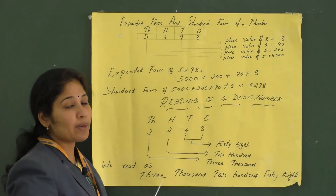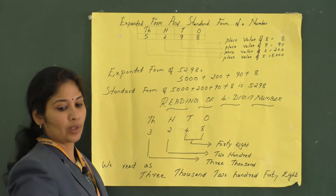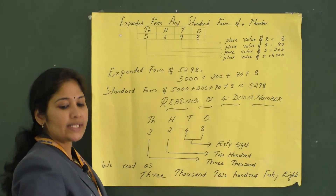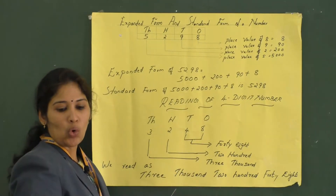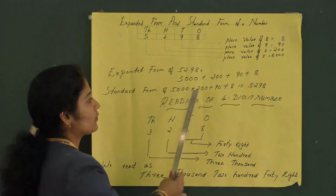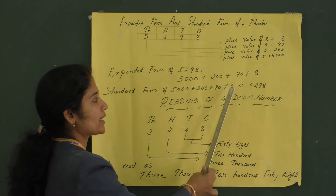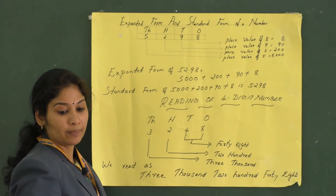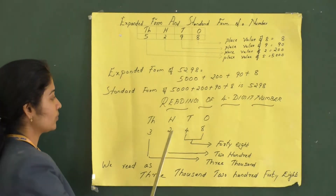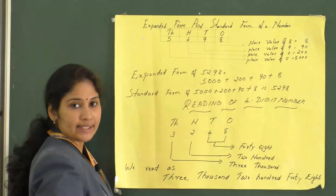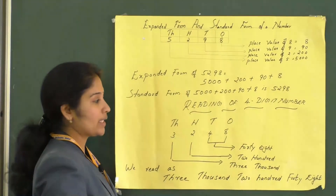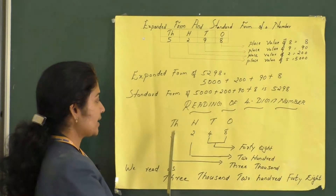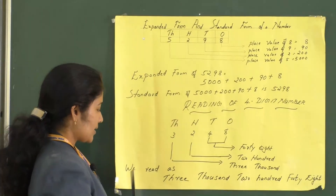What is expanded form? It is the sum of the place values of the digits. So 5298 in expanded form is 5000 plus 200 plus 90 plus 8. What is standard form? The sum of the place values written as a single number. The standard form of 5000 plus 200 plus 90 plus 8 is 5298. Do you know how to read a four-digit number? We always combine the ones and tens — so we don't say '4 tens, 8 ones'; the combined form is 48. 2 is in the hundreds place, so 200. 3 is in the thousands place. We read it as 3,248.